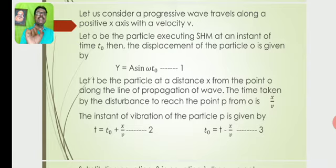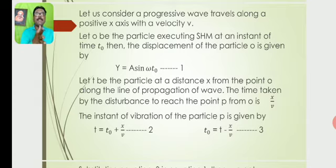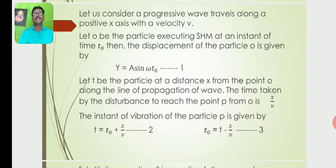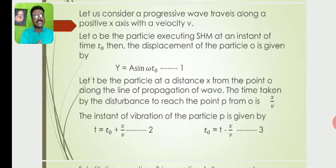Let P be the particle at a distance X from the point O along the line of propagation of the wave. Then the time taken by the disturbance to reach the point P from point O is given by X/V, where X is the displacement of the wave and V is the velocity of the wave. Based on the basic concept of velocity: V = displacement/time, so time = displacement/velocity, giving T = X/V.